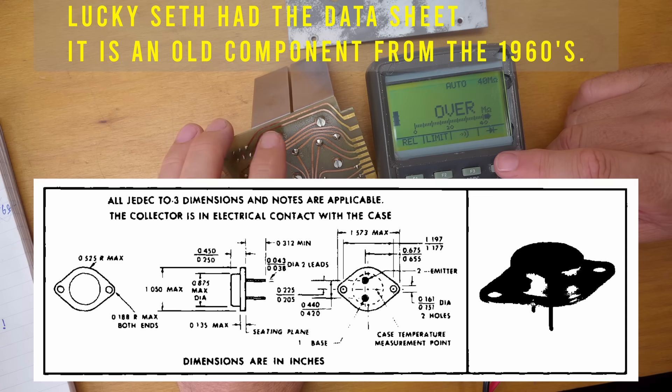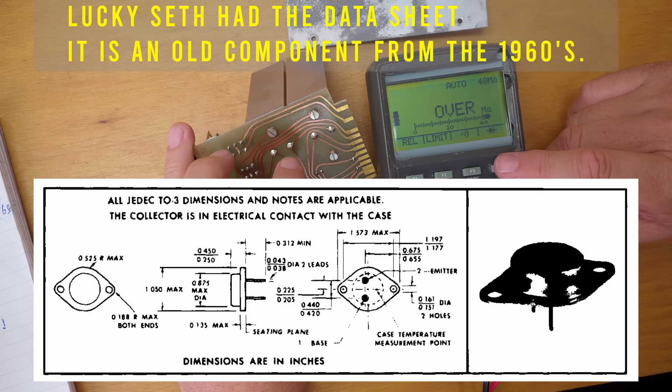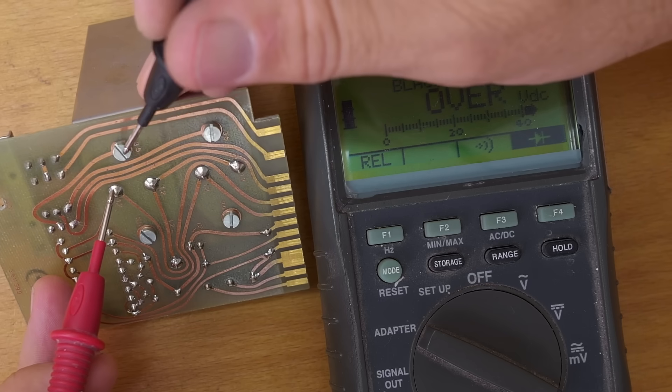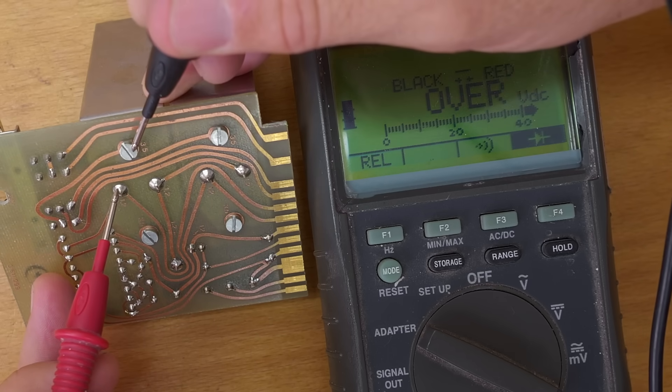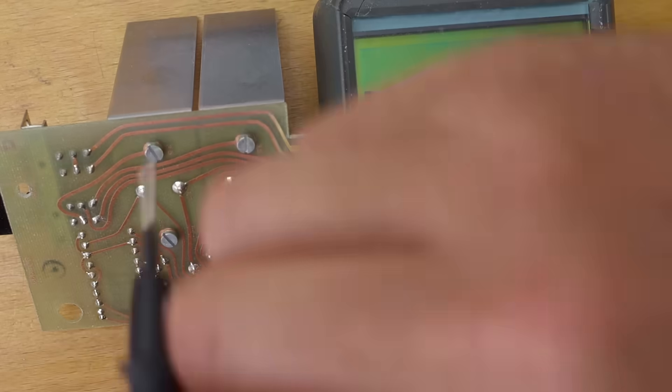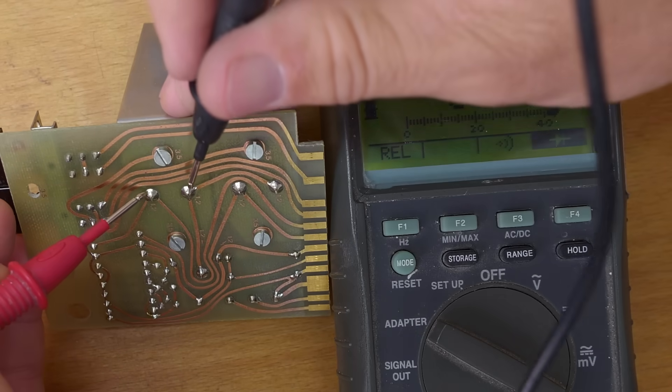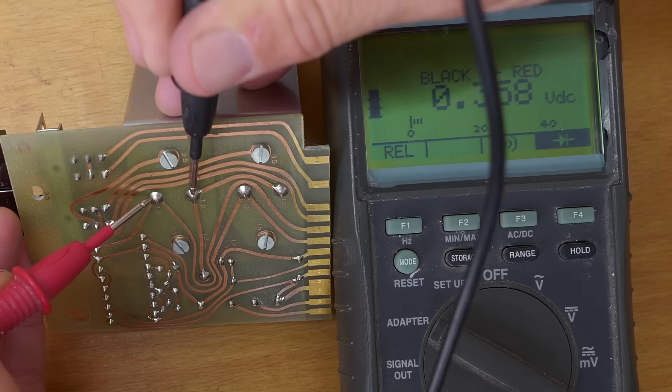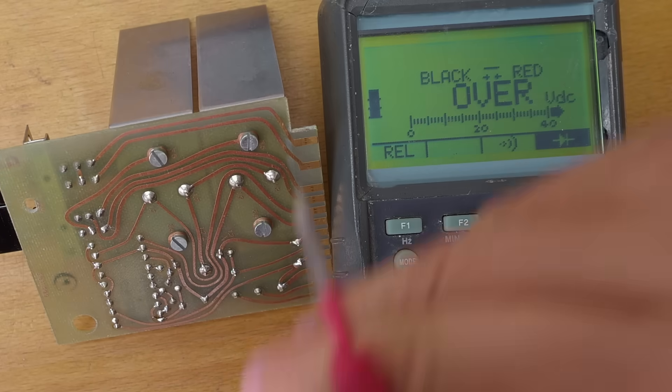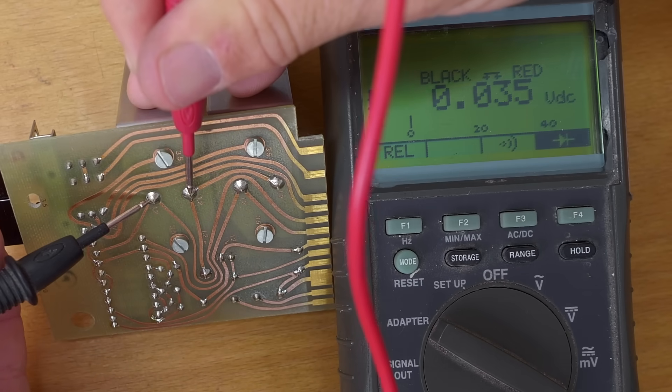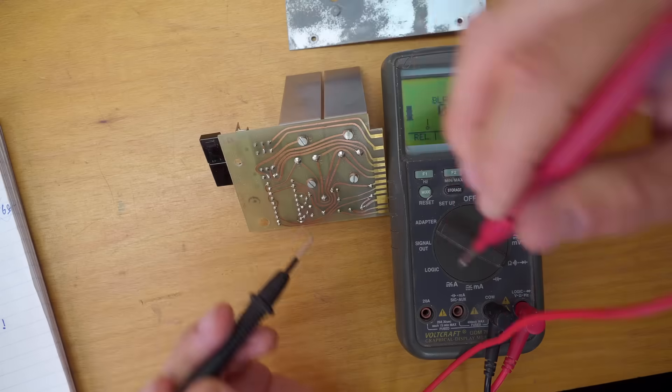So the case is the collector. This one's the base and this one's the emitter. Kind of diode test mode. We have base to collector over and then other way around. Base to emitter is about 10 times that voltage.